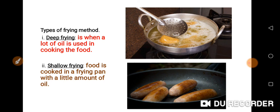We can use shallow frying for pancake and fried egg. When you talk about deep frying, it is used for chin-chin, meat, fish, etc. So these are the two types of frying methods: deep frying and shallow frying.